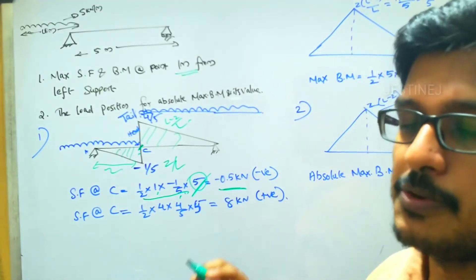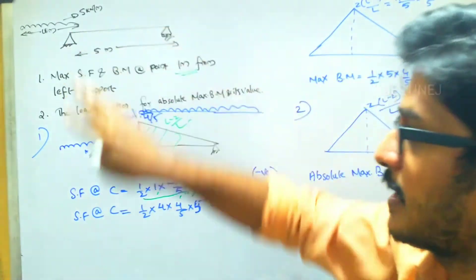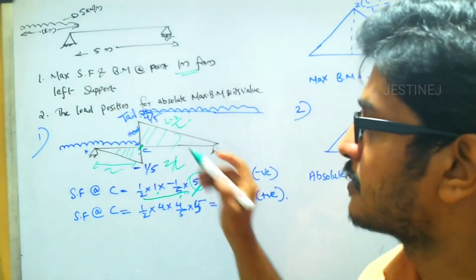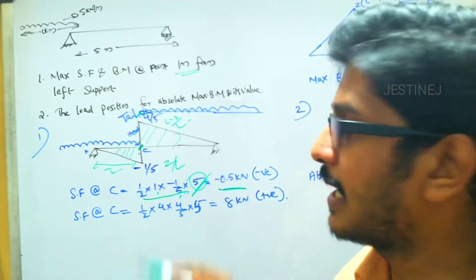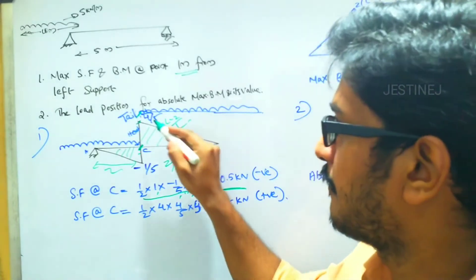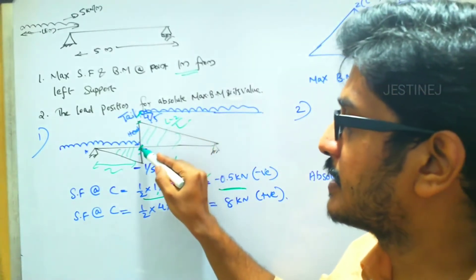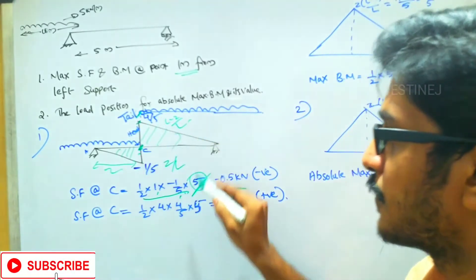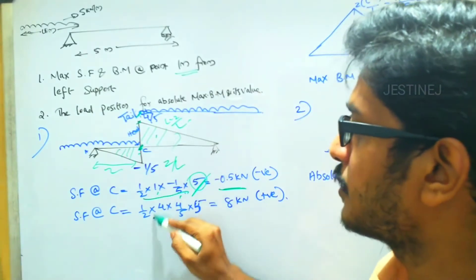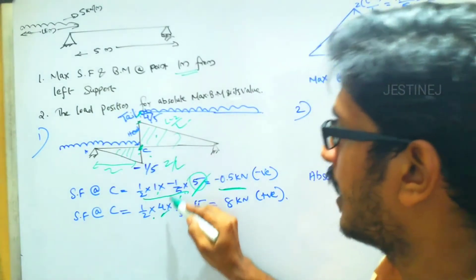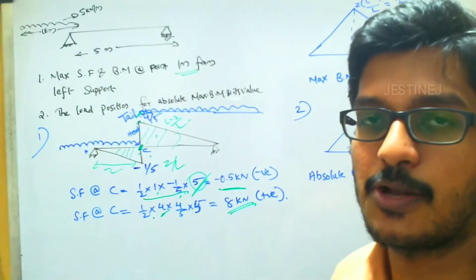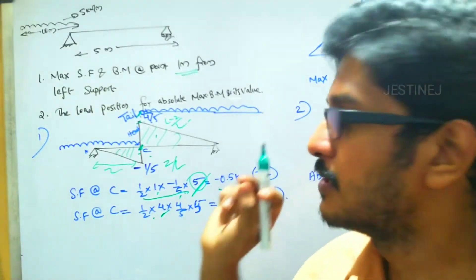Similarly, the maximum positive shear force is found when the tail of the UDL reaches point C. The area under the positive portion of the ILD is: half multiplied by the remaining distance of 4, multiplied by the ordinate value of 4 by 5, then multiplied by the UDL magnitude of 5. This gives a maximum positive shear force of 8 kilo Newton.